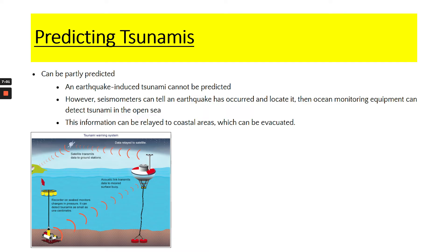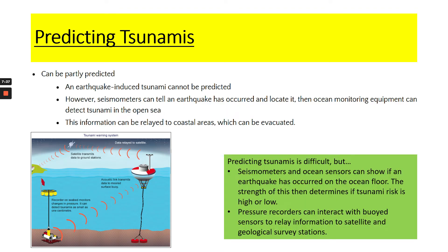Tsunamis sit in the middle of earthquakes and volcanoes — they can be partially predicted. An earthquake-induced tsunami cannot really be predicted, although we can look at where the earthquake is to give us some help. Seismometers and sensors in the deep ocean floor can help locate where the earthquake has occurred and monitoring equipment can detect a tsunami in the open sea, giving us time before it reaches a coastline. We can then determine whether the tsunami risk is high, medium or low, and relay that to ground stations who can warn people to evacuate coastal areas.